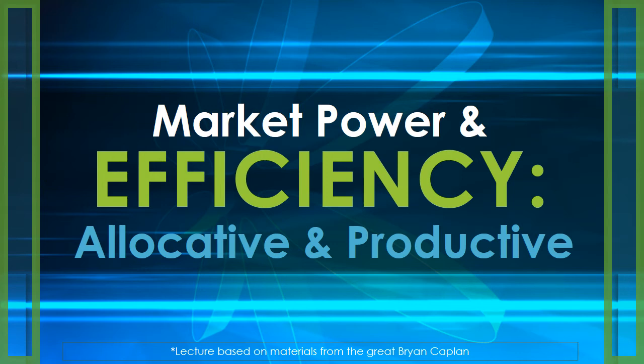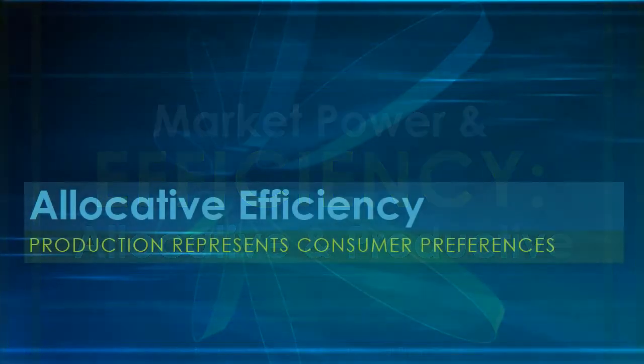With market power and efficiency, we're going to talk about two types of efficiency: allocative and productive. Let's begin.